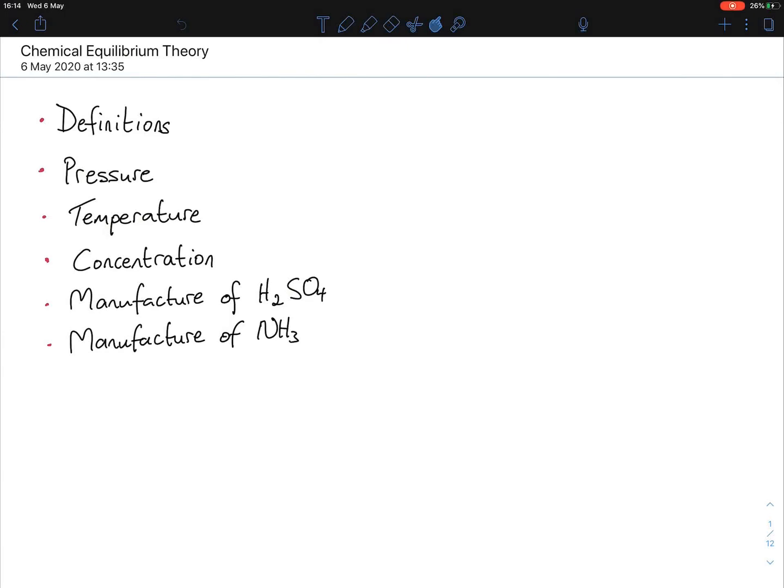Hi everybody, today we're going to look at the beginning of chemical equilibrium theory for bite-sized chemistry. The theory section comes under these headings: definitions, pressure, temperature, concentration stresses, and the manufacture of ammonia or sulfuric acid. This question comes up pretty much on a yearly basis, so it's definitely worth knowing.